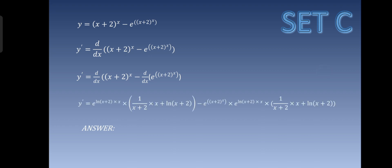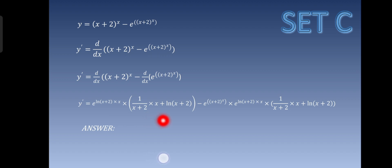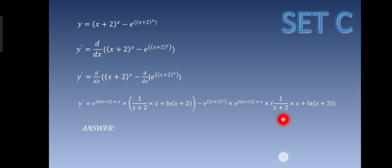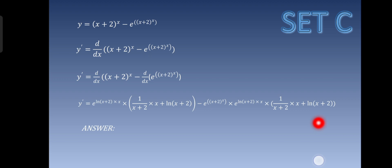y prime is equal to e raised to ln(x plus 2) times x, times 1 over x plus 2 times x plus ln of x plus 2, minus e raised to x plus 2 raised to x, times e raised to ln(x plus 2) times x, times 1 over x plus 2 times x plus ln of x plus 2.